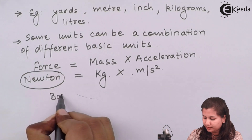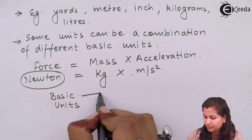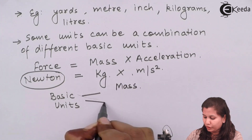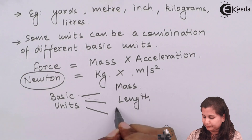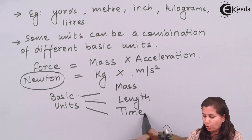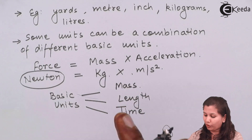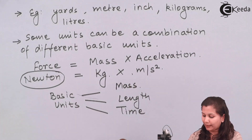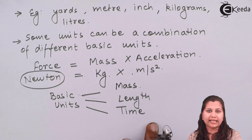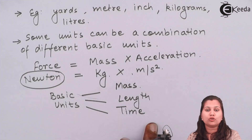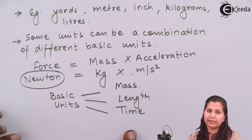The basic units are for mass, for length, and for time. All other units are expressed in terms of these three units. For mass we have kilograms, for length we have meters, and for time we have seconds as the standard units of measurement. So all other units will be expressed in terms of these three basic units.